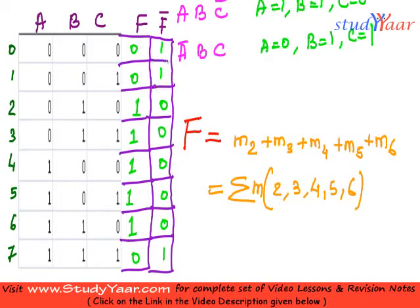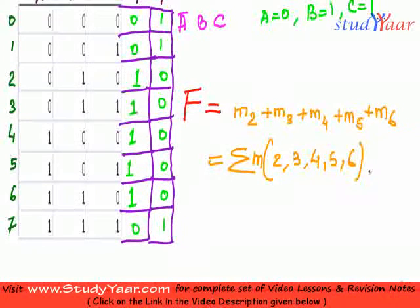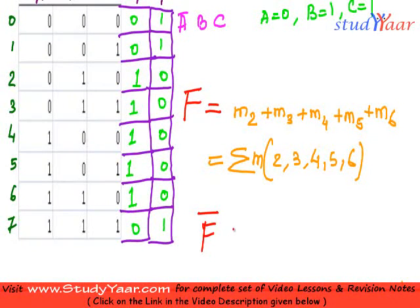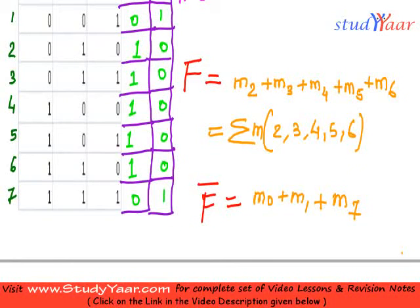Now from this table what you can do is you can calculate F bar in terms of sum of min terms. You can say F bar is equal to M0 plus M1 plus M7. So you can see all those terms which are not in F are in F bar. I am going to write over here. Terms not in F are in F bar.